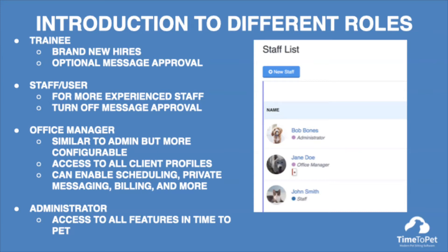The staff or user role has the same permissions as the trainee role and, as we mentioned earlier, can be configured to allow them to send messages without approval. The staff role has access to clients they have been assigned to in the past or future, or are clients they are preferred sitters for. The staff role and the trainee role only have access to the information and tools required to do their job properly. We will go over how to set up preferred sitters later in this video.